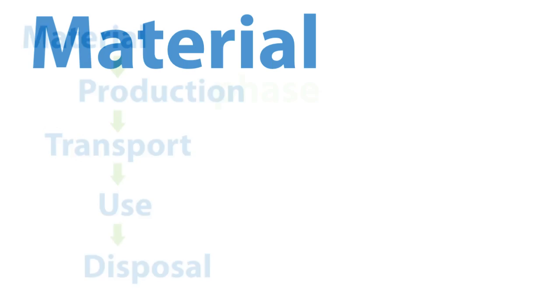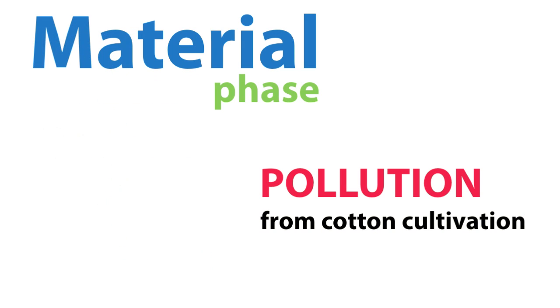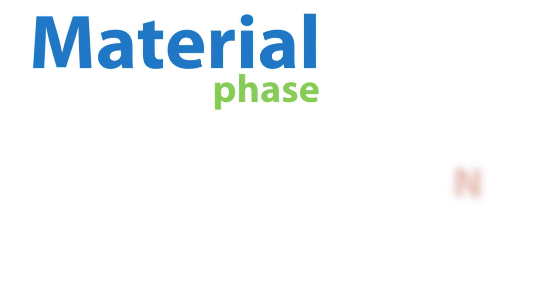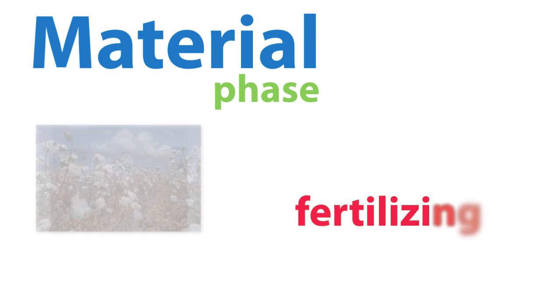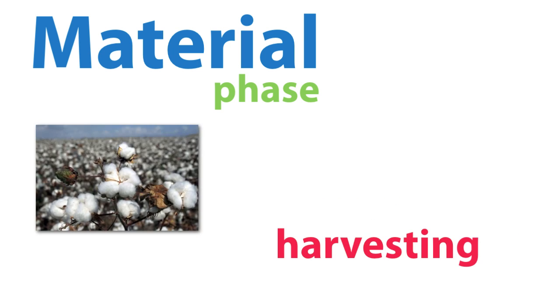Pollution occurs in every phase. In the material phase, pollution comes from cotton cultivation — from sowing, fertilizing, irrigating, harvesting, and ginning.